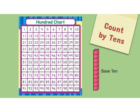So if I have on my hundreds chart the number 10 and I add 10 I get 10 plus 10 is 20, 20 plus 10 is 30, 30 plus 10 is 40 and so on.